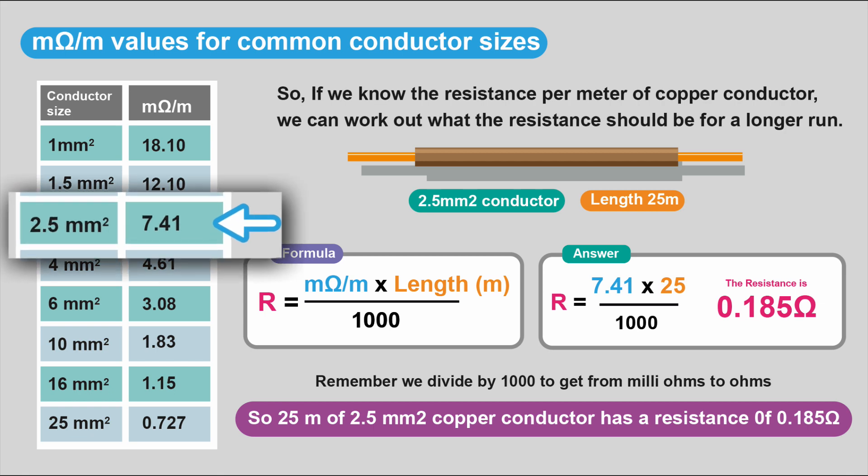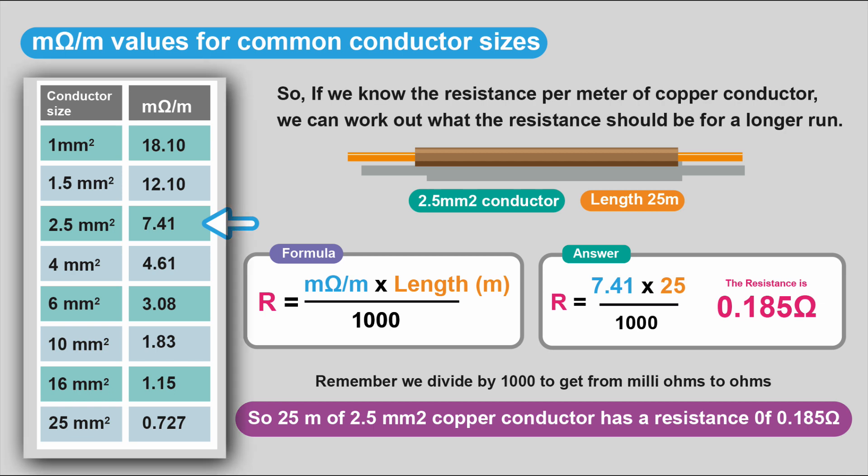Here we can see the 2.5 millimeters squared conductor, the 7.41 milli-ohms. There's publications that give this value for all the different cable sizes. Here I've just got from 1 millimeter squared to 25 millimeters squared, which are common cable sizes we use.